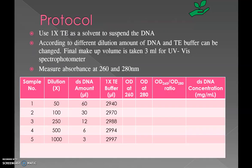The protocol is very simple. We can use 1x TE buffer as a solvent to suspend the DNA. Here we have made a table for different dilution factors. If we want to dilute 50 times our current sample, we can take 60 microliters of DNA and add the appropriate amount of TE buffer to make up a final volume of 3 ml, as required for a UV spectrophotometer where the minimum sample to fill in the cuvette is 3 ml.